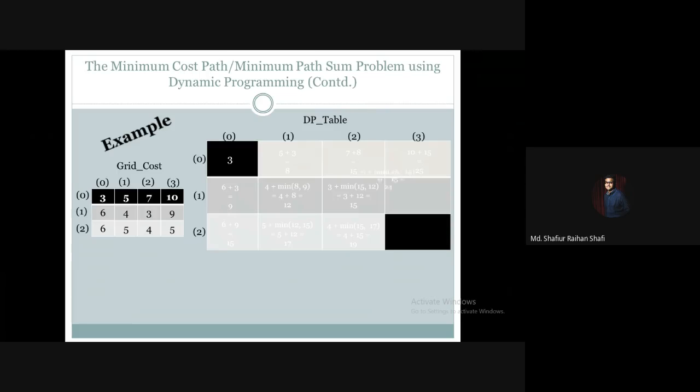For cell (1,3), we can come from (0,3) or (1,2). Between these two cells, the minimum cost is from the left cell. The upper cell has 25, so we pick from the left which is 15. So 9 plus 15 gives us 24. And lastly, we have the destination cell (2,3). Its own cost is 5. We add the minimum of the upper cell and left cell. The upper is 24, the left is 19, so minimum is 19. Five plus 19 gives us 24.